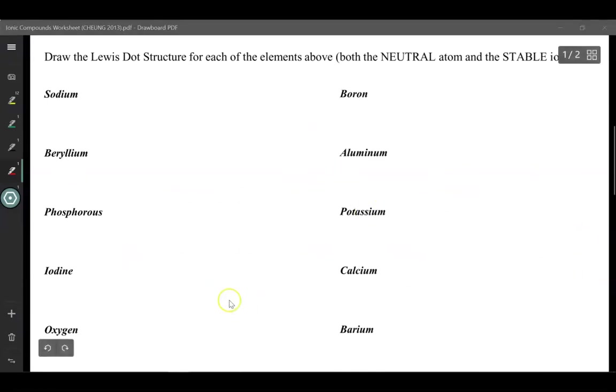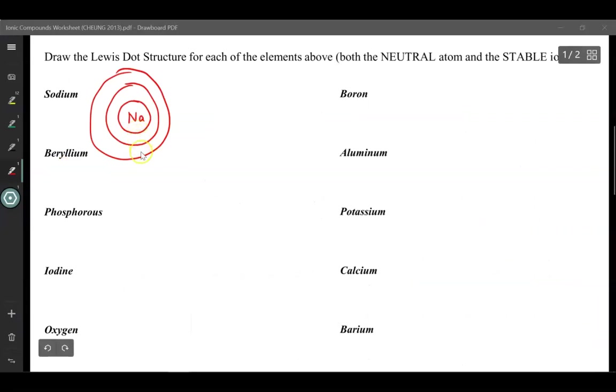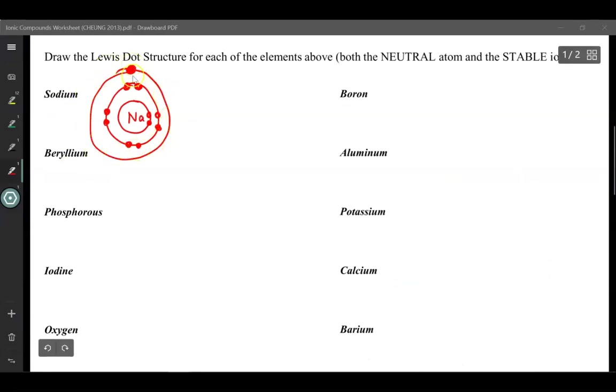Up until this point, we've been drawing a lot of Bohr-Rutherford diagrams. So sodium is in period 3, 1, 2, 3, so it's got 3 electron shells. So 3 electron shells, and it's in group 1, so it has 1 valence electron. So 1 electron in the valence outermost shell, while the other inner shells are all filled up.